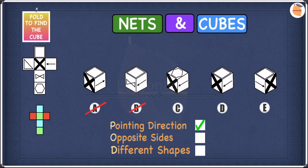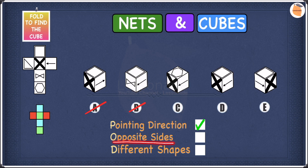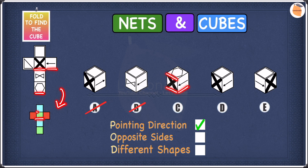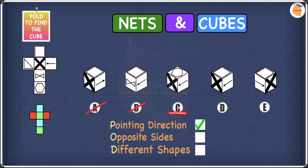Let's put a tick next to pointing direction and move to opposite sides. For C, the shapes are an X shape, an arrow, and a hexagon. Looking at the net, we have the hexagon, the X shape, and the arrow. In terms of opposite sides, the X shape and the hexagon are on the same color, meaning they are on opposite sides. Since opposite sides can never be next to each other, but in cube C the X and the hexagon are next to each other, we can cross off C.